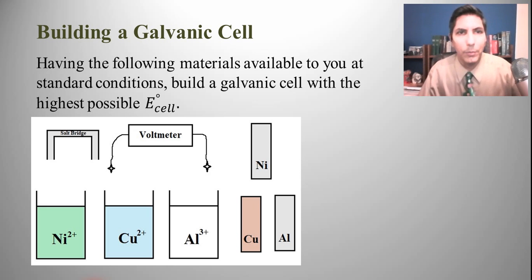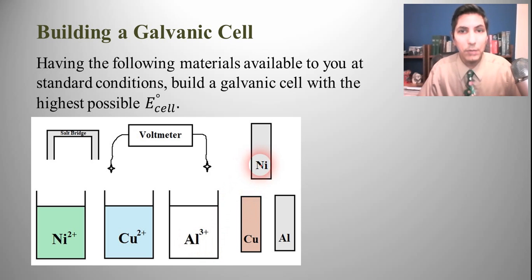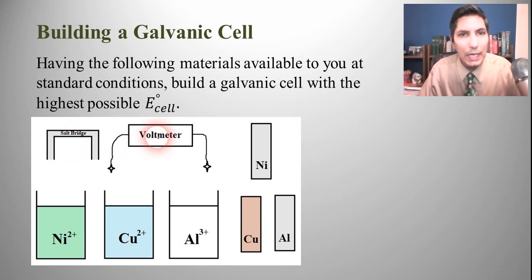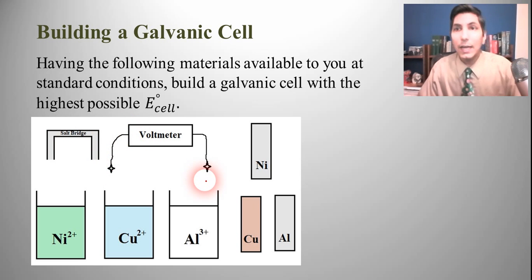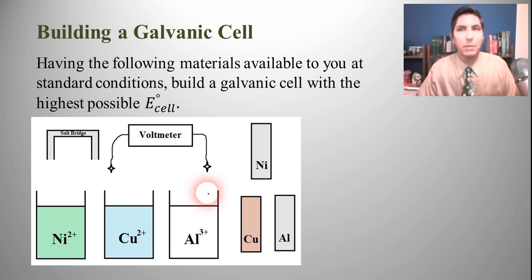In this first example, we're going to be given several pieces of equipment. We have some nickel ions, some copper ion solution, some aluminum ion solution, and we're given the corresponding metals — some nickel metal, copper metal, and aluminum metal electrodes — as well as a salt bridge and a voltmeter with some wires and clips. The question is asking us to take these materials at standard conditions and build a galvanic cell that has the highest possible E cell, or the highest possible potential difference.